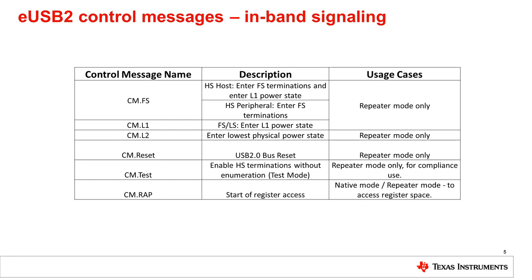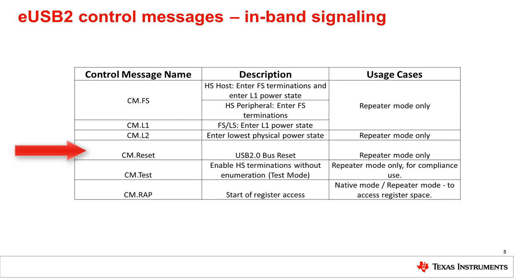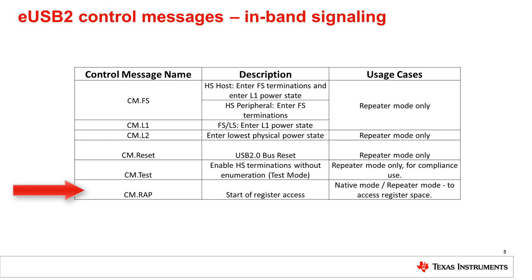What else is new in eUSB2? To configure the eUSB2 repeater in the correct mode, handle USB 2.0 high-speed handshaking, and support USB 2.0 low-power states, the eUSB2 supplement uses in-band signaling in the form of control messages sent from an SoC to an eUSB2 repeater to keep the USB and eUSB2 buses in sync and optimize power. All eUSB2-capable devices — SoC or repeater — are required to support control messages. cm.fs is used to enable low-power states; cm.l1 and cm.l2 enable even lower-power mode support; cm.reset is used as a USB bus reset; cm.test is used only for compliance mode testing, specifically for eye diagrams; and cm.wrap is used for direct register accesses.